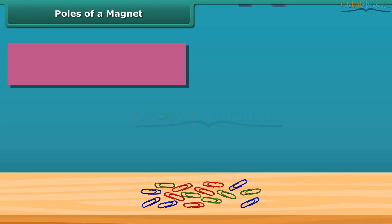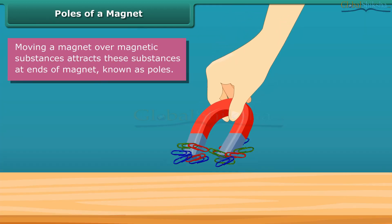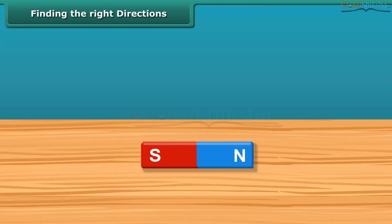When you move a magnet over magnetic substances, you will see that these substances get attracted to particular parts of the magnet only. These are generally the two ends of the magnet. These ends are called the poles of the magnet.